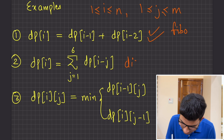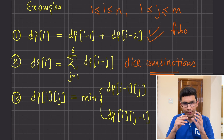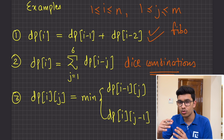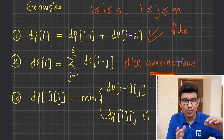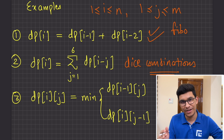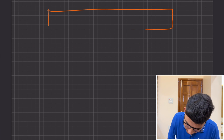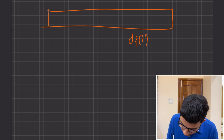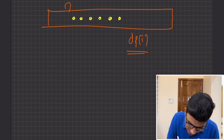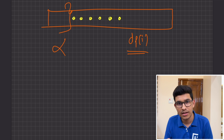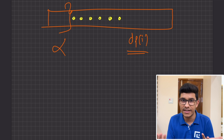The second example is the Dice Combinations problem. Its transition is: DP of i equals DP of i-1 plus DP of i-2 up through DP of i-6. So your current state depends only on the previous six states, and you can discard the 7th state and beyond. At any given point, you only need the last six values in memory.